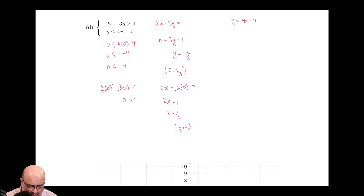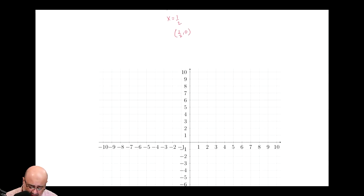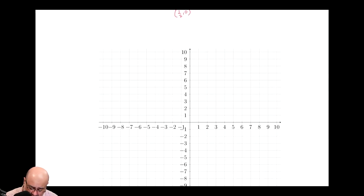For the last one, I found the intercepts again, only for the first line. So for 2x minus 3y equals 1, I plugged in 0 for x and I plugged in 0 for y, and I got these two points: 0, negative 1 third, and 1 half comma 0. So 0 comma negative 1 third is 0 comma negative 0.3.